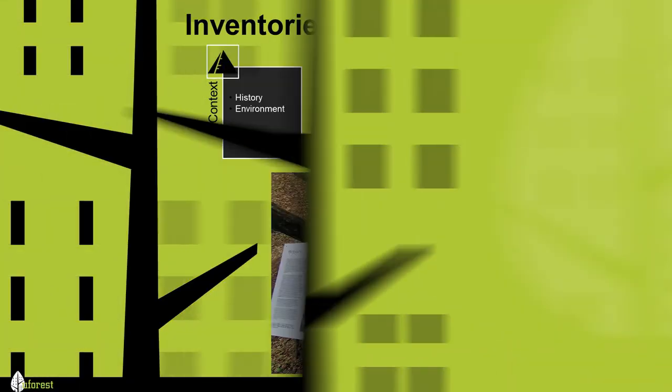By doing inventories and assessments we are answering the question: what do we have? Know where you came from to know where you are going. The information collected in inventories and assessments will be summarized in plan sections covering the status of the urban forest. In this step, the focus is on four main sections: context, vegetation, management, and community.